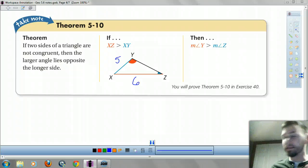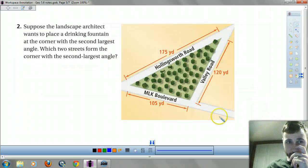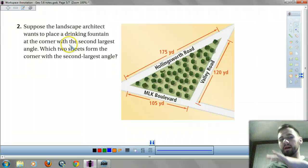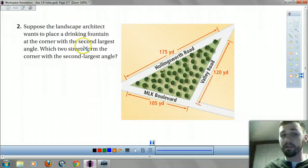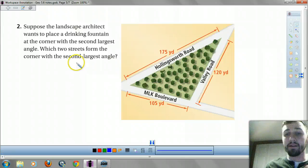Okay. I think I'm just going to leave a video on here, guys, because I don't know how to do it where it doesn't. So just, we'll live with it. So suppose you're an architect, right? You want to make a drinking fountain at the corner with the second largest angle. What two streets form the corner with the second largest angle? It's also the second smallest, right? It makes three angles.